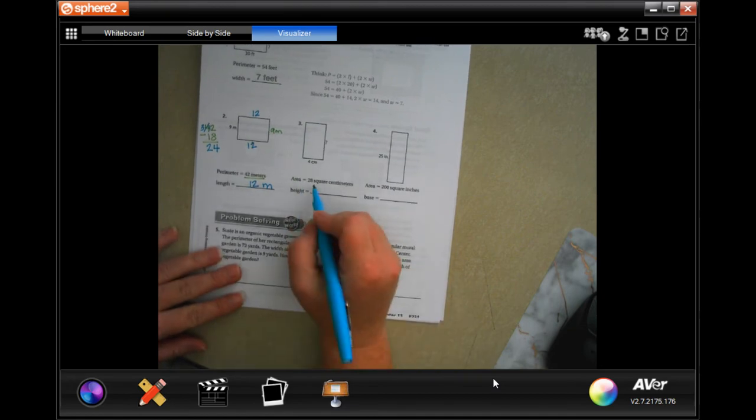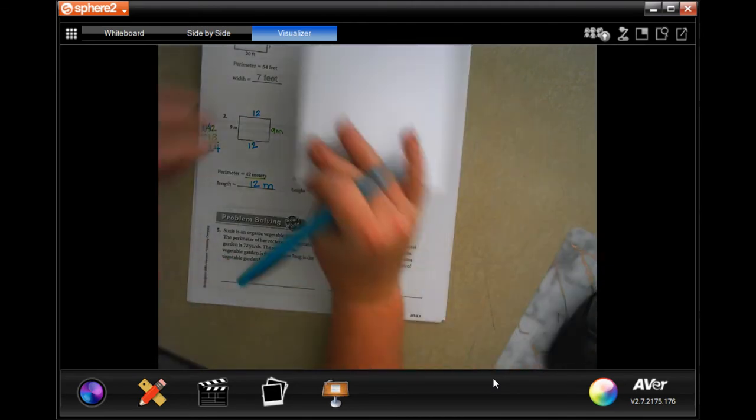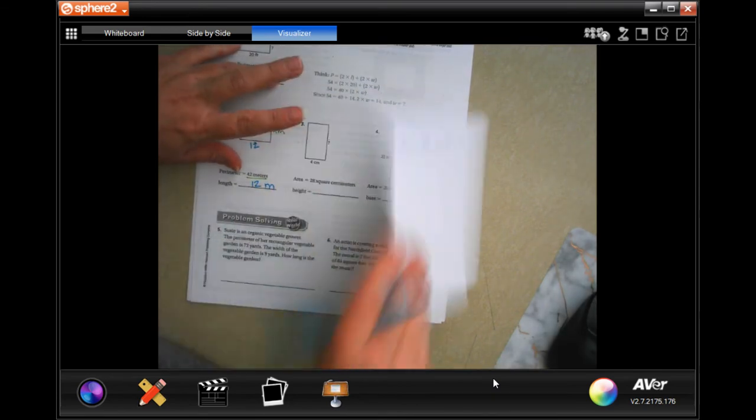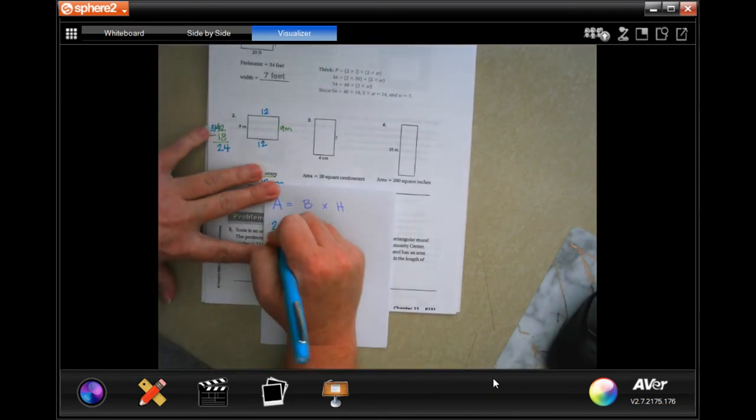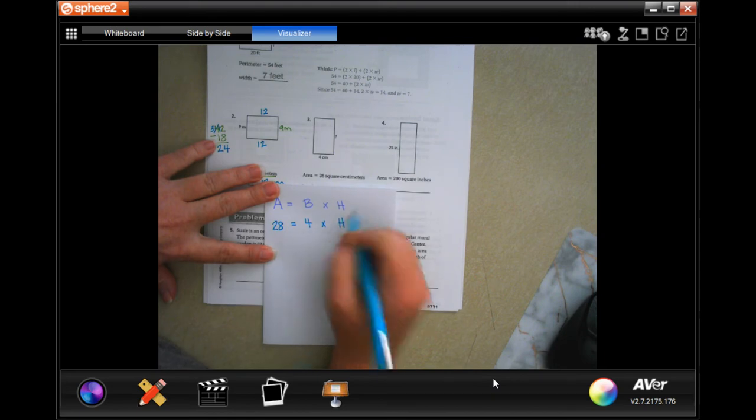Let's do this one. The area is 28. Well, this one's a little bit different. So area, the formula for area is base times height. It's telling us the area and it's telling us the base.